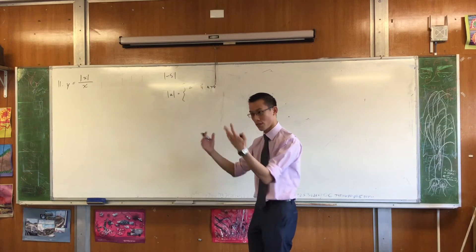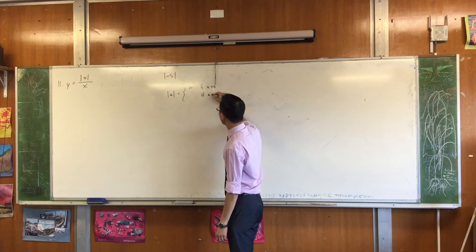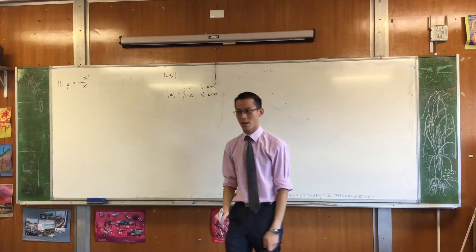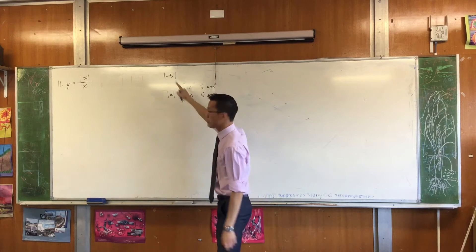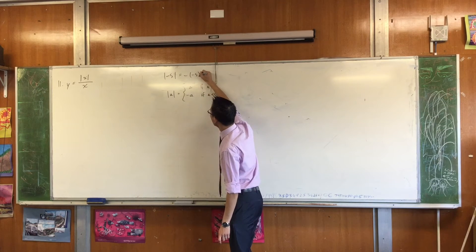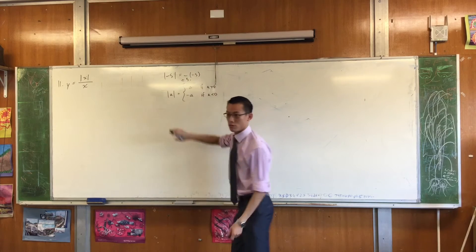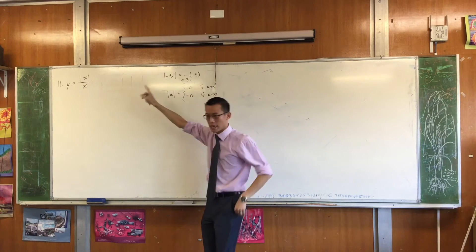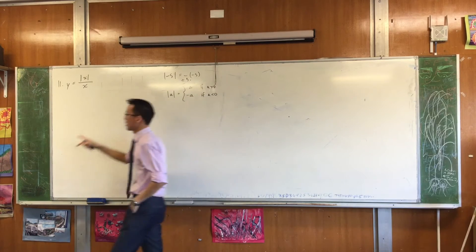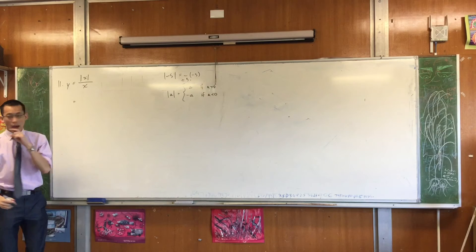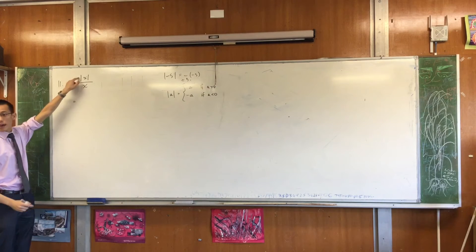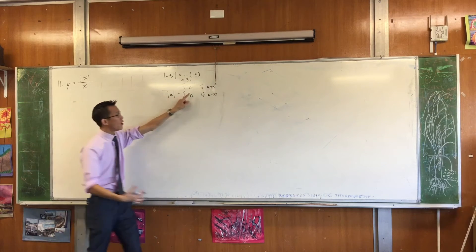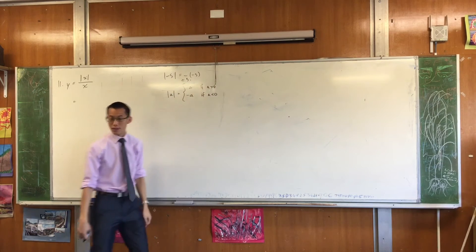So the absolute value of 5 is just 5, and the absolute value of 87 is just 87. But if A is negative, then we slap another negative sign on it and that cancels out. So the absolute value of negative 5 is negative of negative 5, and that's what turns it into positive 5. Now, this is the definition for numbers, and it's the same deal with functions. So when you look at absolute value of x, you can replace that either with x or with negative x, depending on what its value is.